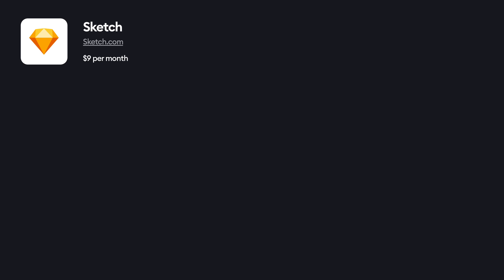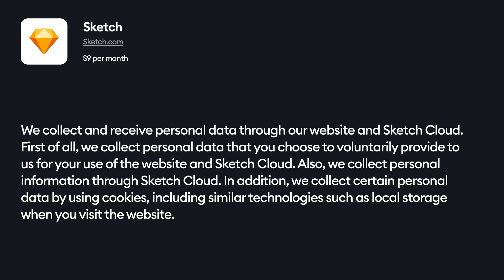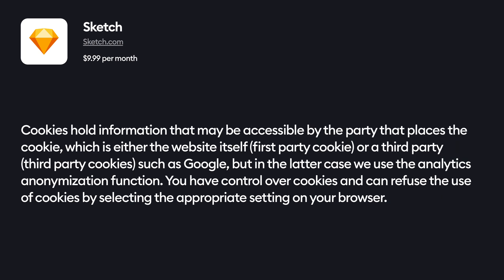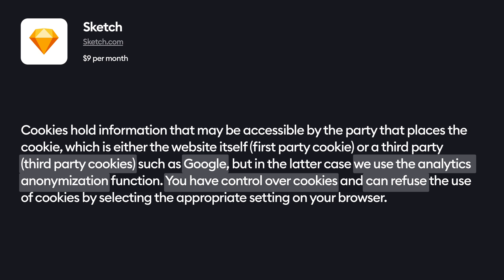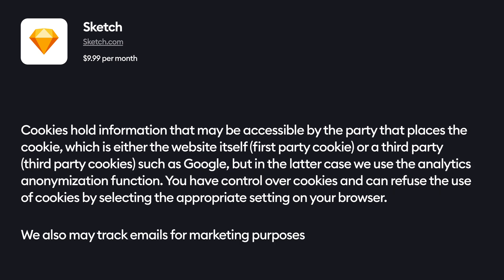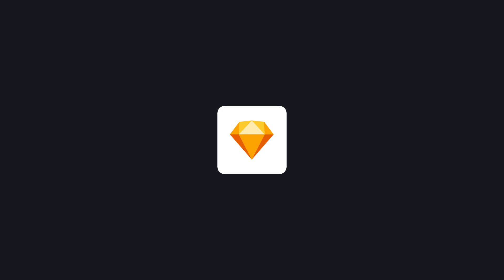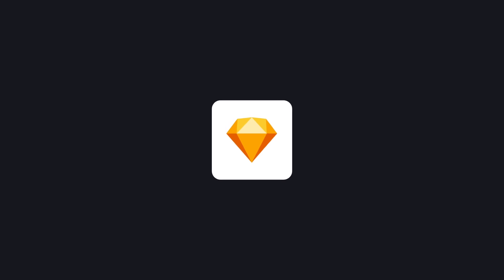Let's start with Sketch. It costs $9 per month. What this paragraph means is that the app itself is apparently not tracking you — the only tracking being done is on the marketing website and the Sketch Cloud platform. They use cookies and local storage, which is pretty common. They also explain that they can be third-party cookies, likely referring to Google Analytics on their website, but they are anonymized. They may collect your email for marketing purposes, but that's something everybody does. Overall, they are tracking you for some marketing reasons, mostly on their website or web-based platforms, and you can block it if you want.